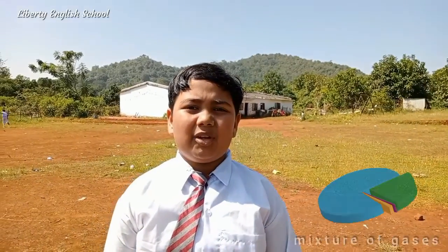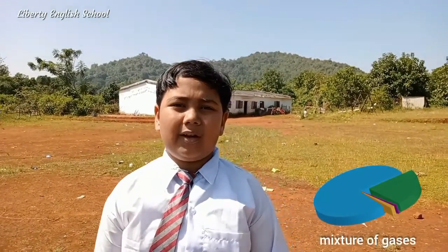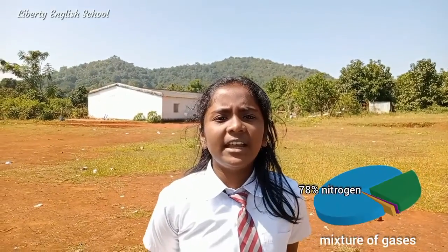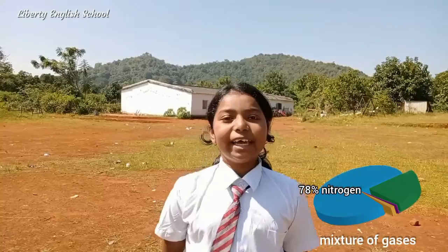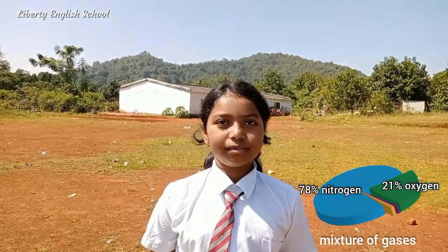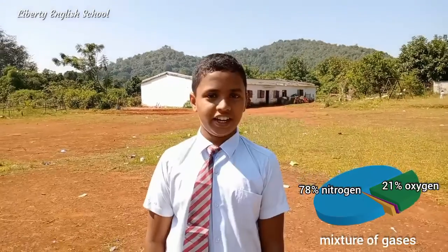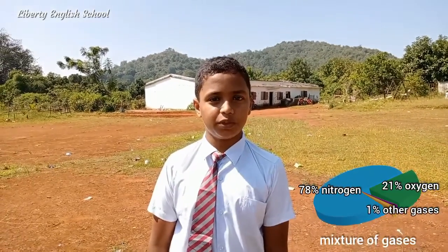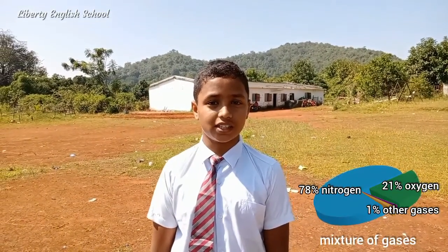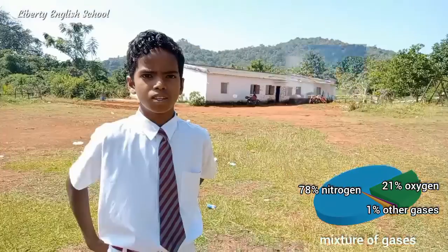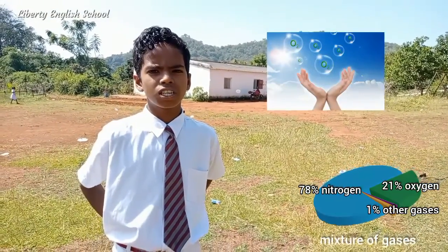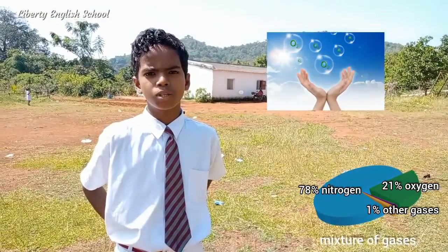Air is a mixture of different kinds of gases. Nitrogen is 78%, oxygen is 21% of air, and less than 1% is argon, carbon dioxide, and other gases. Oxygen is the most important gas for living beings, for breathing.